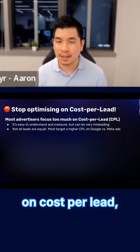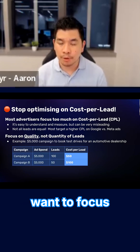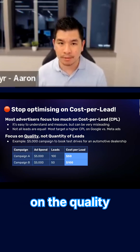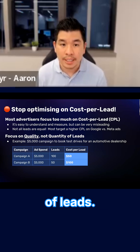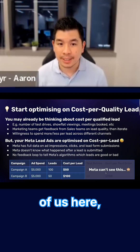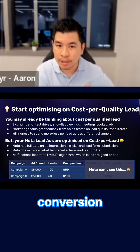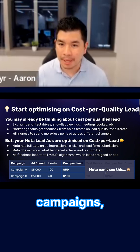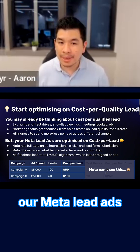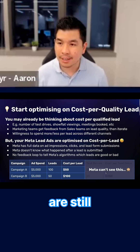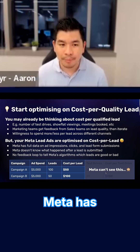Stop optimizing on cost per lead. What we want to do is focus on the quality of leads, not the quantity. For many of us, unless we're actively running conversion-optimized campaigns or using Meta Conversions API, our Meta lead ads are still optimized on cost per lead, whether we know it or not.